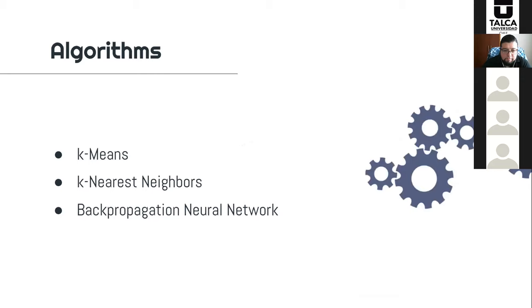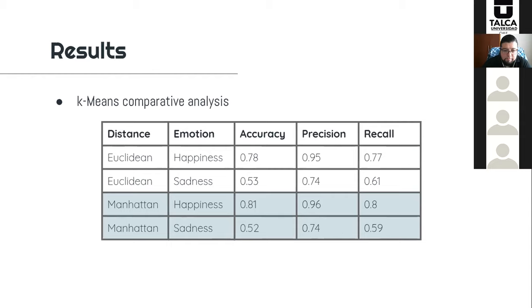Three algorithms were implemented to analyze the data. We used K-means to analyze the dataset, K-nearest neighbors and backpropagation neural network to classify. K-means was implemented initially considering points with 14 dimensions, where each dimension represents the difference between features of neutral and expressive face. We defined two clusters corresponding to acted or genuine emotion, and implemented two versions: one using Euclidean distance and another using Manhattan distance. The best results were found using the Manhattan distance.